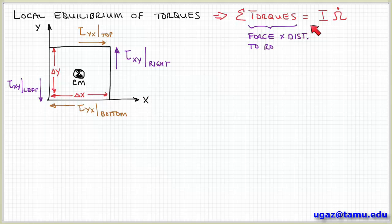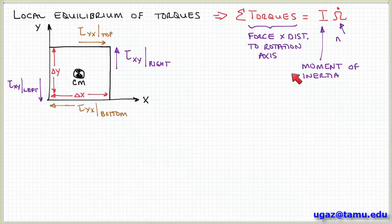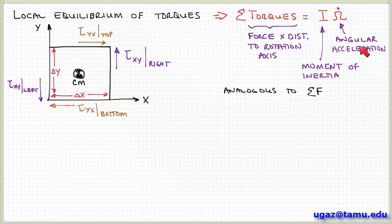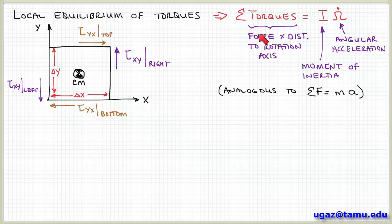Now I want to look at the torques associated with these stresses on this fluid element. The sum of the torques, as you may remember from physics, is equal to the moment of inertia times the angular acceleration. Remember that torque is force times distance to the axis of rotation. I is the moment of inertia and omega dot represents the angular acceleration — analogous to Newton's second law, F equals ma, or more correctly, the sum of forces equals the time rate of change of momentum. Since I have stresses instead of forces, the same relationship holds per unit area, so I can divide both sides by the unit area and that cancels out.